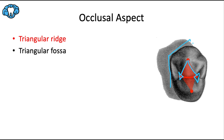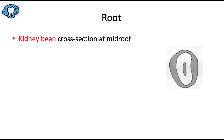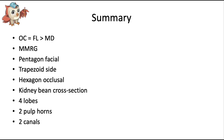This tooth is notorious for breaking during an extraction. The crown has an asymmetrical hexagonal shape from the occlusal view. In cross-section at the middle of its root, the tooth would appear as a kidney bean shape, thanks to that strong root flute on the mesial surface.